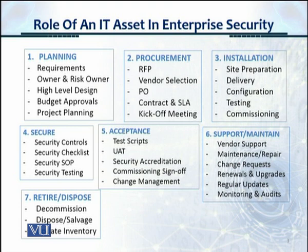Step six is support and maintenance. Now the equipment is in production and you would patch it, perform upgrades, vendor support, maintenance repair, change requests, renewals, upgrades, updates, and monitoring and audits. Step seven is retirement and disposal when the equipment is no longer of use: you decommission it, remove it from the network, dispose and salvage it, and update the inventory so that it's reflected.